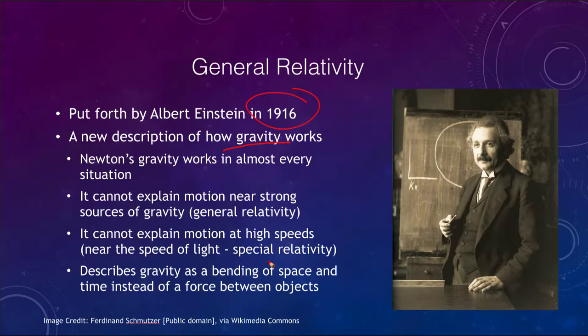Isaac Newton described gravity as a force between two objects. So that each object, one object here and another object here, there would be a force pulling on this object and a force pulling on this object. And as you recall, those were equal and opposite forces. And that was a way of explaining how orbits worked.